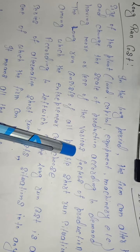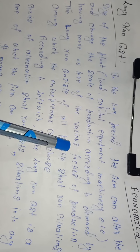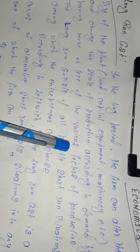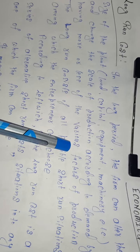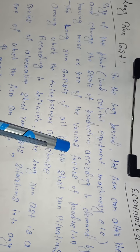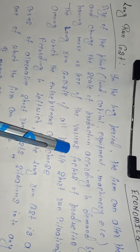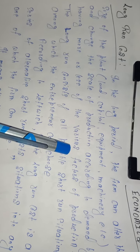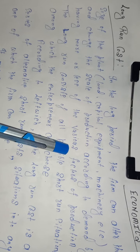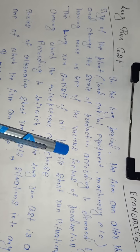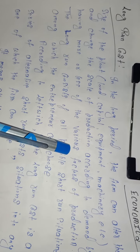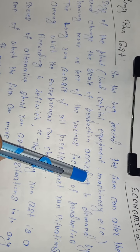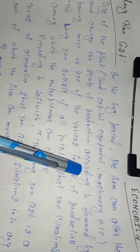Suppose a businessman installs a first machine when demand exists in the market. As production continues and time passes, demand will increase. As demand increases, the first plant will reach its maximum capacity. After that, the entrepreneur has to go for a second plant. Similarly, as demand keeps increasing, the entrepreneur has to add more and more plants. In this way, the entrepreneur is making variations in all factors — not just labor, but also land, capital, equipment, and machinery. All are increasing as demand increases in the market.